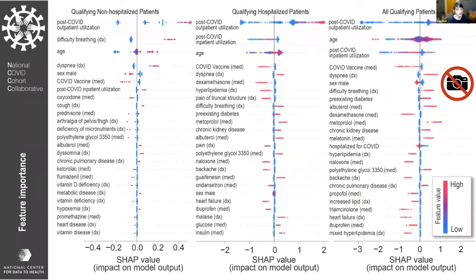This is a showcase of the different features that ended up being most important in each of our models. Unsurprisingly — particularly because many long COVID clinics are pulmonary focused — we found that dyspnea, or difficulty breathing, ended up near the top of each of our models.